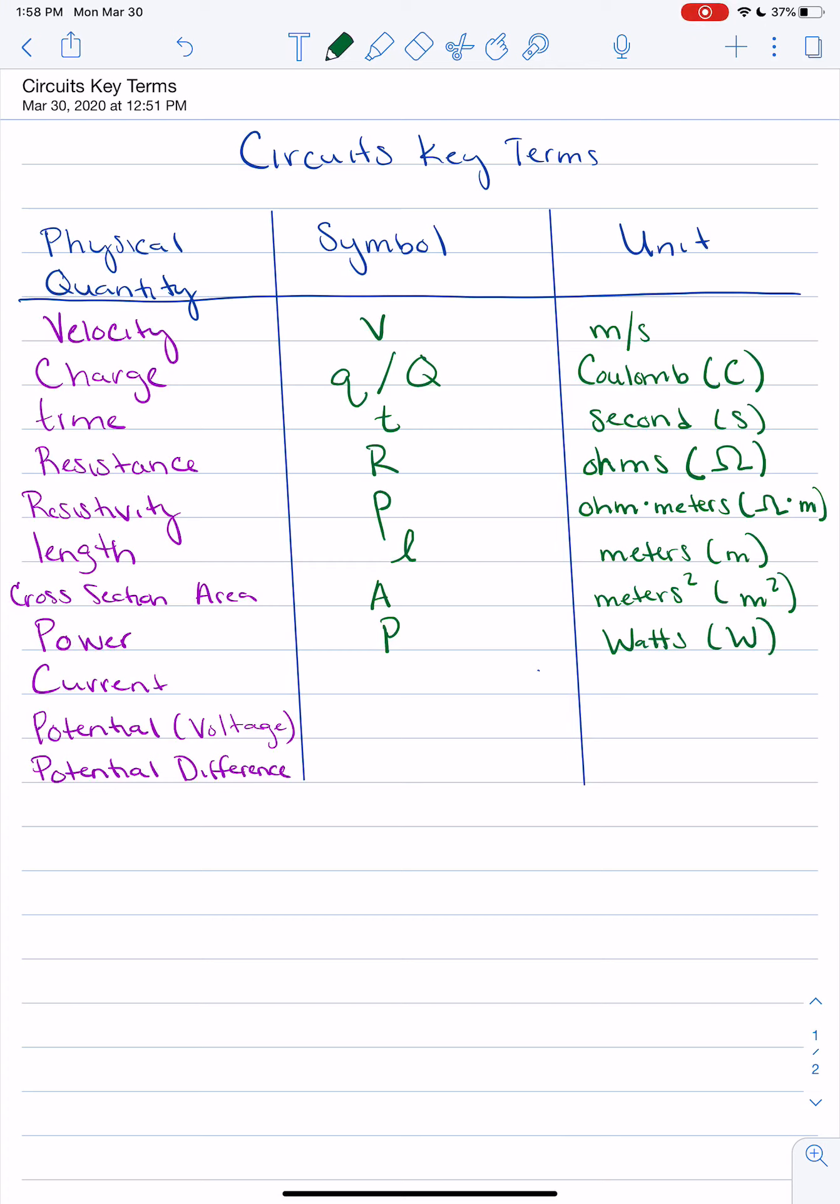Current, the symbol for current is I. Current is that flow of charge through an object. So we use a capital I for the symbol. That's what you're going to see in equations. But the unit for current is actually the amp. And we abbreviate that with an A.